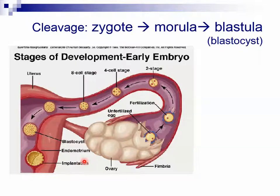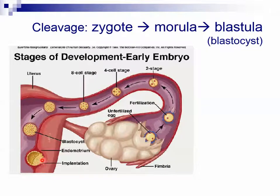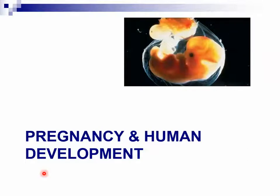Here's the problem. The corpus luteum is programmed to self-destruct — it's programmed to self-destruct in two weeks. When the sex hormone levels drop low, the endometrium sloughs off. So if the endometrium sloughs off and the woman has her period, what's going to happen to the embryo? It'll literally be flushed. From the embryo's point of view, this is not a good thing.